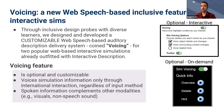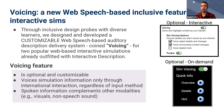Using that framework as a starting point, and through inclusive design probes with diverse learners, we designed and developed a customizable web speech-based auditory description delivery system coined 'voicing' for two interactive simulations already outfitted with interactive description for screen readers. The voicing feature is intended to be optional and customizable — to voice simulation information only through intentional interaction, regardless of input method, and to complement other feedback modalities, whether visuals or non-speech sound. The menu options allow adjusting the type and amount of content read during interaction, as well as a toolbar to turn voicing on and off or press buttons to play important information about the current state of the simulations at any time.